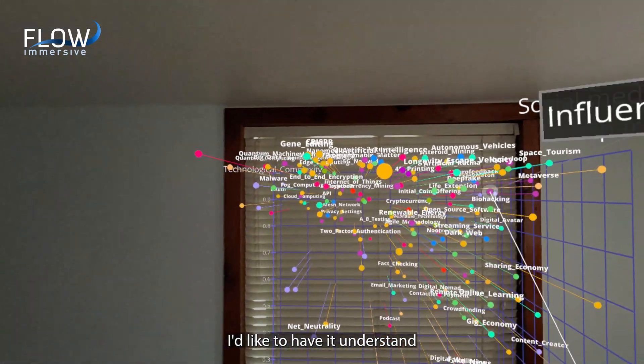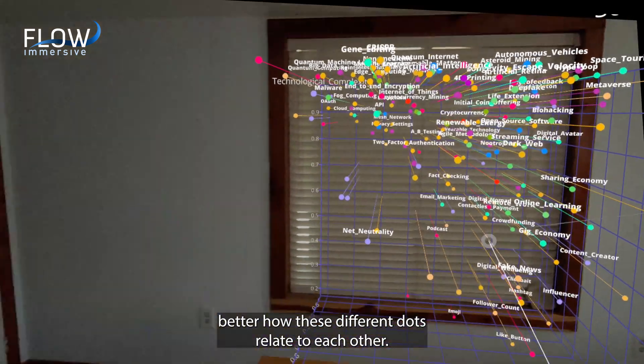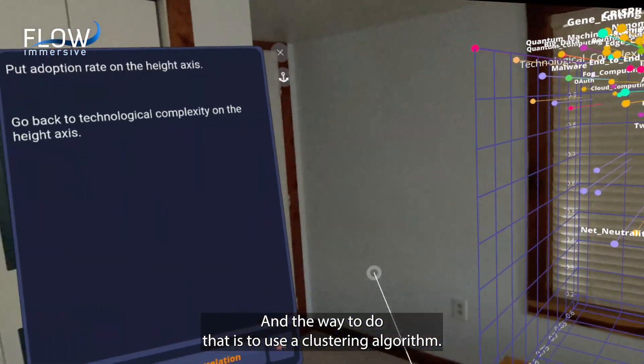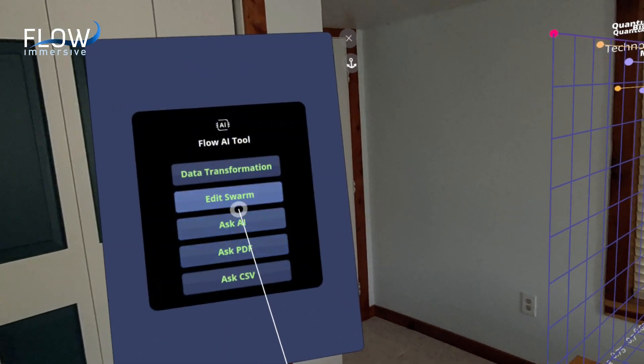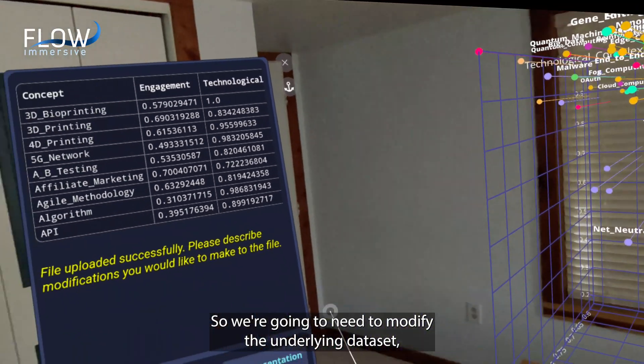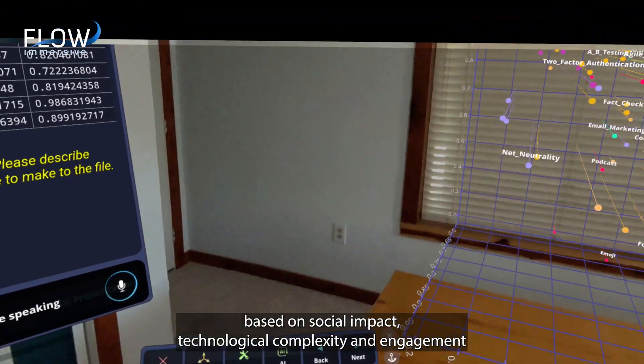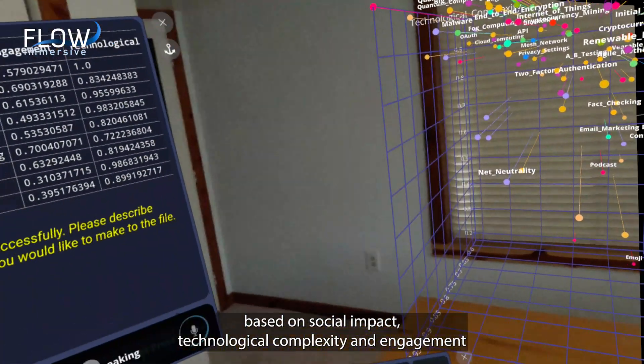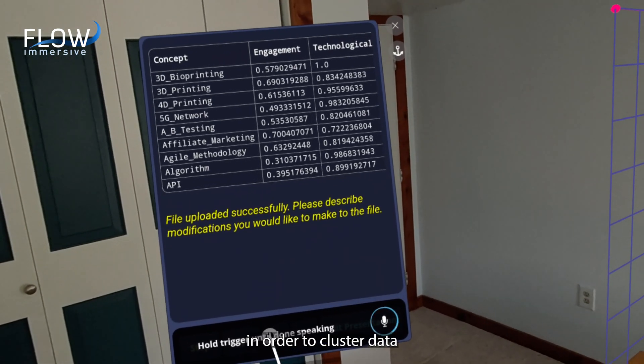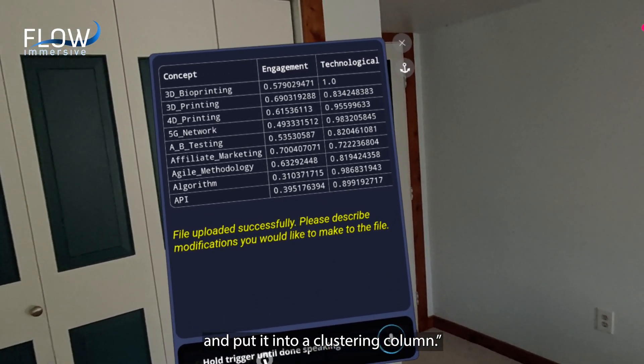I'd like to have it understand better how these different dots relate to each other and the way to do that is to use a clustering algorithm. So we're going to modify the underlying data set. Use a clustering algorithm based on social impact, technological complexity, and engagement in order to cluster data and put it into a clustering column.